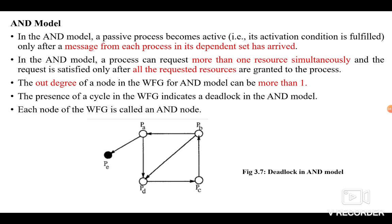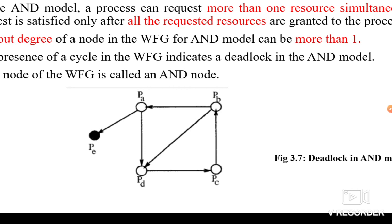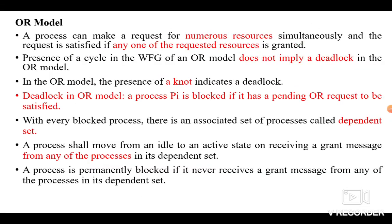To satisfy the request in the AND Model, we have to get all the requested resources. The out-degree of a node in the wait-for-graph can be more than one. The presence of a cycle in the wait-for-graph again indicates a deadlock. Each node in the wait-for-graph is called an AND node. Here we have cycles: PD → PC → PB → PD, and PB → PA → PD → PC → PB — both indicate deadlocks.